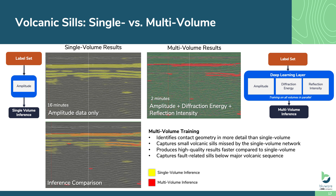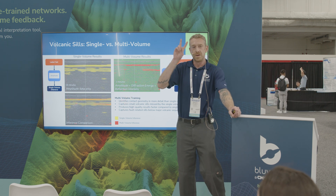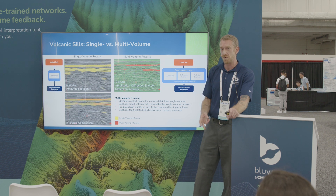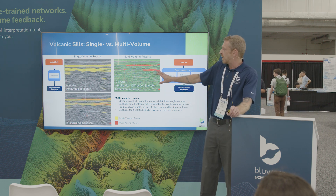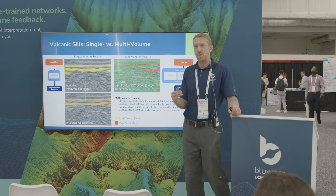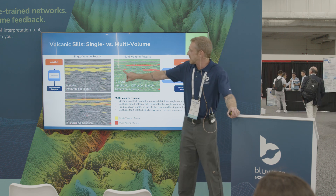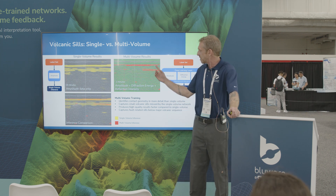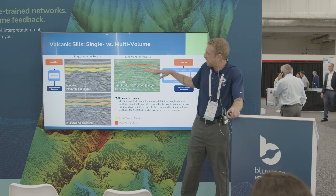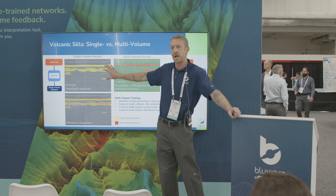Here's another view of the results for the volcanic sills. On the left in yellow, a network trained only on amplitude data for 16 minutes. On the right, the multi-volume results trained on amplitude, diffraction energy, and reflection intensity for just two minutes — an order of magnitude improvement in speed. The multi-volume training identified the contact geometry very well, top and base contacts, and even captures a mass transport complex with volcanics overlaying on top.